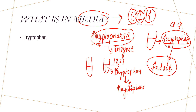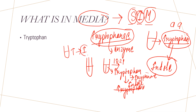The tryptophan is converted into indole in the presence of the enzyme tryptophanase. If the bacteria is unable to produce the tryptophanase enzyme, the tryptophan will not be converted into indole. But if the bacteria can produce the enzyme, tryptophan is converted into indole in the medium.